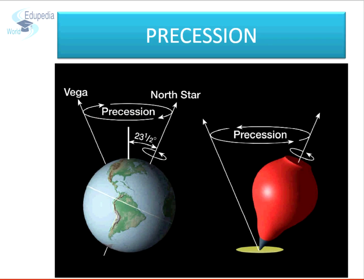Precession: the earth's axis undergoes a change of orientation, and just like a spinning top, the direction of the earth's axis undergoes a slow precession. Earth's axis completes one precession in 26,000 years. Due to precession, the pole star changes between Polaris and Vega.